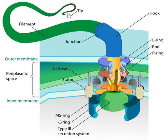A flagellum, plural flagella, is a lash-like appendage that protrudes from the cell body of certain bacterial and eukaryotic cells. The primary role of the flagellum is locomotion, but it also often has function as a sensory organelle, being sensitive to chemicals and temperatures outside the cell.